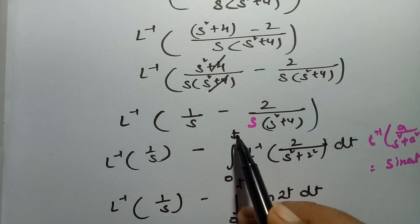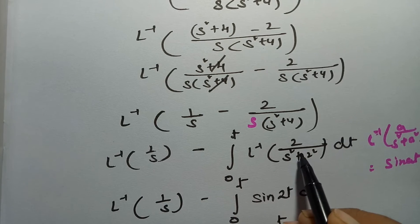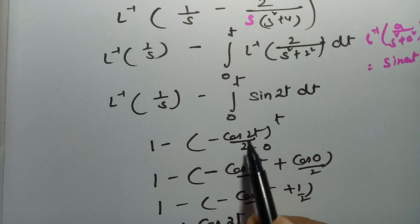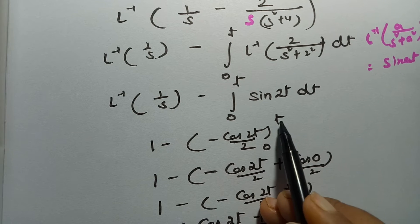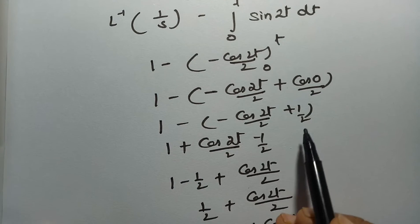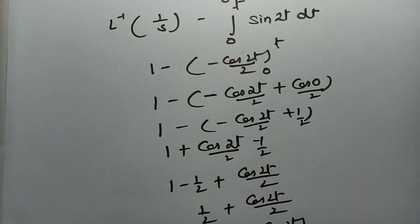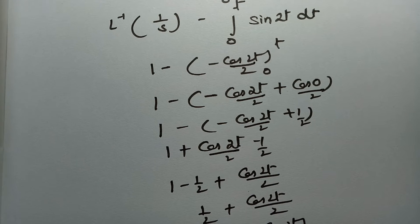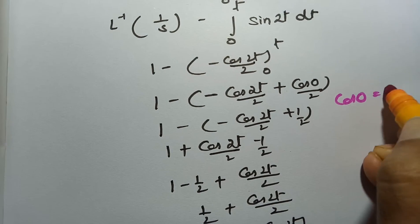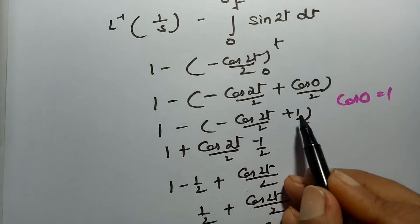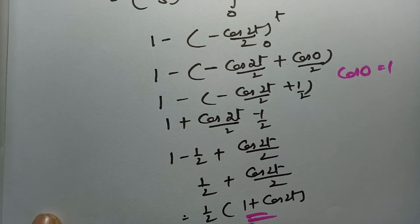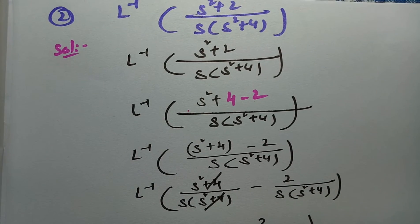Applying the division theorem with f(t) = sin(2t): the integral from 0 to t of sin(2t) dt = [−cos(2t)/2] from 0 to t. Substituting limits: −cos(2t)/2 + cos(0)/2. Since cos(0) = 1, this gives −cos(2t)/2 + 1/2. The final answer is (1/2)(1 + cos(2t)).